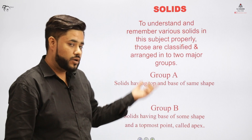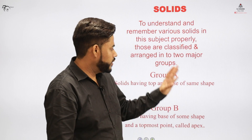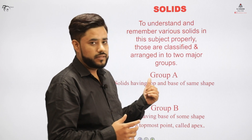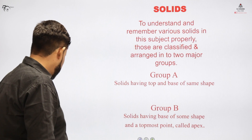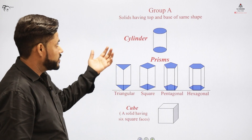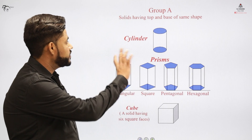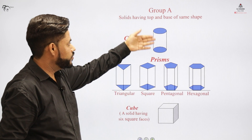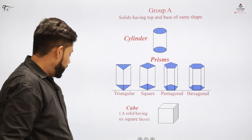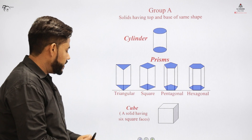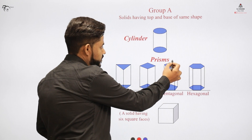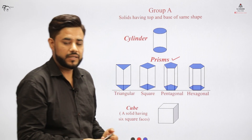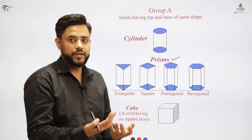That topmost point is called the apex point. So we have two categories of solids. Category A, where the base and top are similar — the example given was a cylinder — these are technically called prisms. A prism is any solid that has the base and top as similar shapes, and you join all the points to obtain a 3D shape and give it a height.